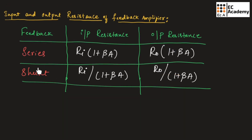These are the formulas for series and shunt type of feedback amplifiers. For a series-series type, use the series expression for input resistance and the series expression for output resistance. For shunt type, use the shunt expressions for both. For a shunt-series amplifier, use the shunt expression for input and the series expression for output. Remember this for exam purposes. This concludes the topic of input and output resistance of feedback amplifiers. Hope you have understood the topic. Thank you.